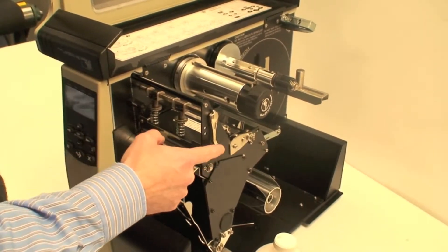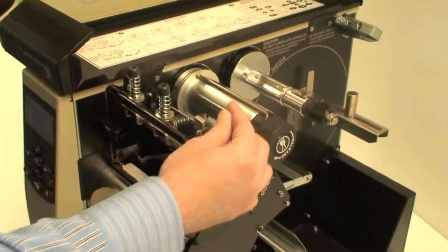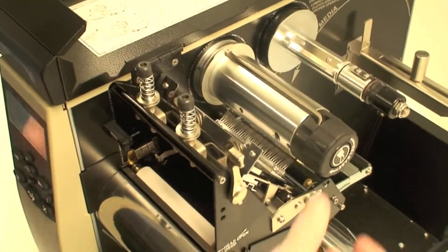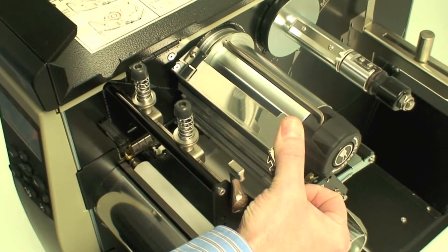In order to clean the print head, you're going to open the print head lever there and flip the toggles all the way up. That will expose the print head.